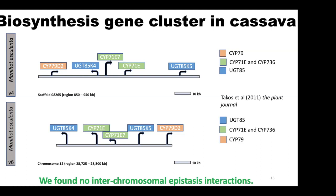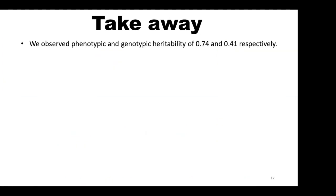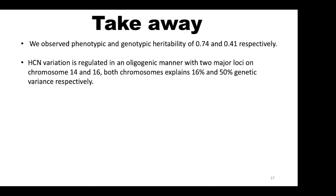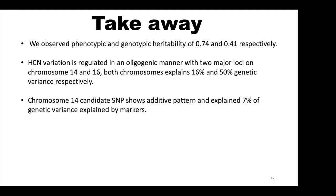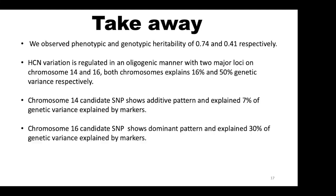We performed genome-wide epistasis interaction tests — about 400 million tests across the genome — but found no interchromosomal interaction for this trait. To summarize findings so far: genotypic heritability for this dataset is 0.74 and 0.41, the regulation is oligogenic with two peaks — one on chromosome 14 and one on chromosome 16 — explaining 16% and 50% of variation respectively. Chromosome 14 shows an additive pattern explaining 7%, while chromosome 16 shows a dominant pattern explaining 30% of genetic variation.